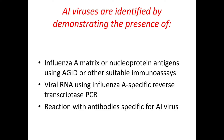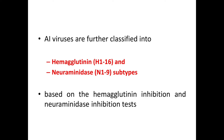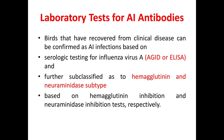AI viruses are classified into 16 hemagglutinin and 9 neuraminidase subtypes, with classification based on hemagglutinin inhibition and neuraminidase inhibition tests. Birds that have recovered from clinical disease can be confirmed as AI infections by serologic testing using AGID or ELISA, and further subclassified by hemagglutinin inhibition and neuraminidase inhibition tests.